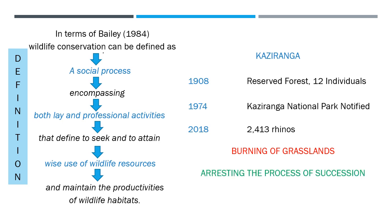Controlled burning is done to arrest the process of ecological succession, so that succession doesn't take place. We will look at what succession is in the next slide.